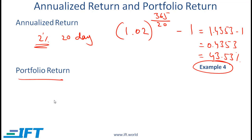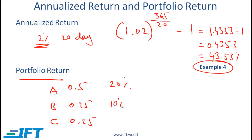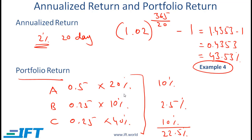Portfolio return is straightforward. If you have three stocks — A with a 50% weight, B with 25%, and C with 25% — and returns of 20%, 20%, and 40% respectively, the portfolio return is a weighted average: multiply each weight by its return and sum the results. The portfolio return here is 22.5%.